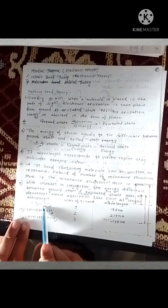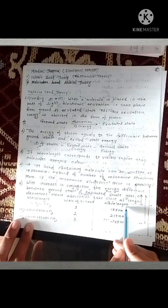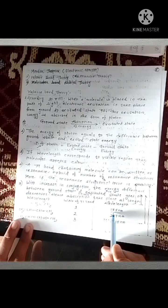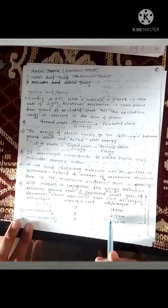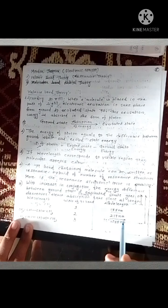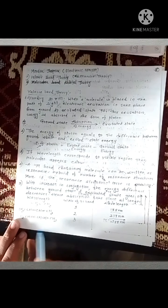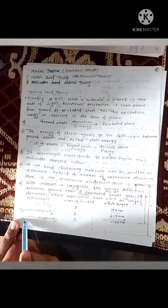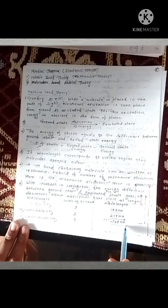See here: ethylene contains one pi bond and its absorption wavelength is 175 nm. In 1,3-butadiene, there are two pi bonds, and due to the increased conjugation the wavelength increases to 217 nm. In the next structure with three double bonds, the wavelength increases further.